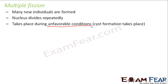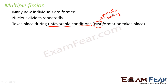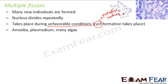When environmental conditions are unfavorable, a protective covering called a cyst forms around the organism. Inside the cyst, the nucleus keeps dividing many times, forming many nuclei. When favorable conditions return, the cyst breaks and all the nuclei are released, each forming a new daughter organism. This occurs in organisms like amoeba, plasmodium, and many algae.